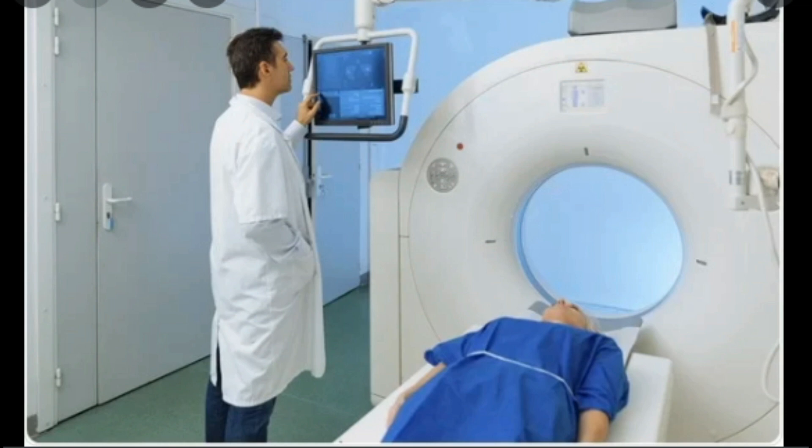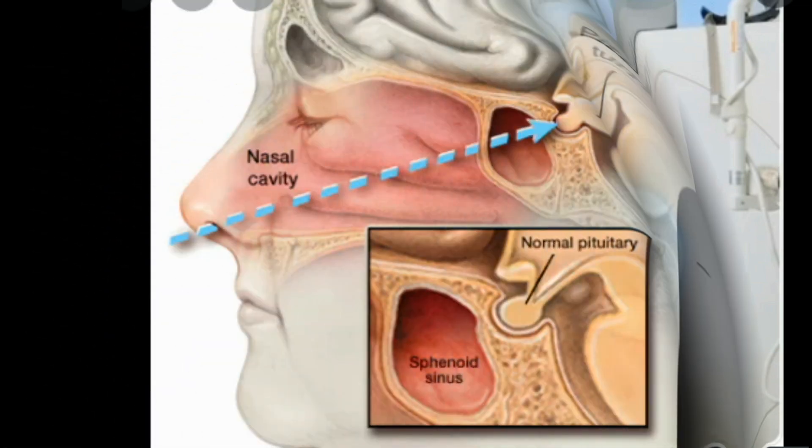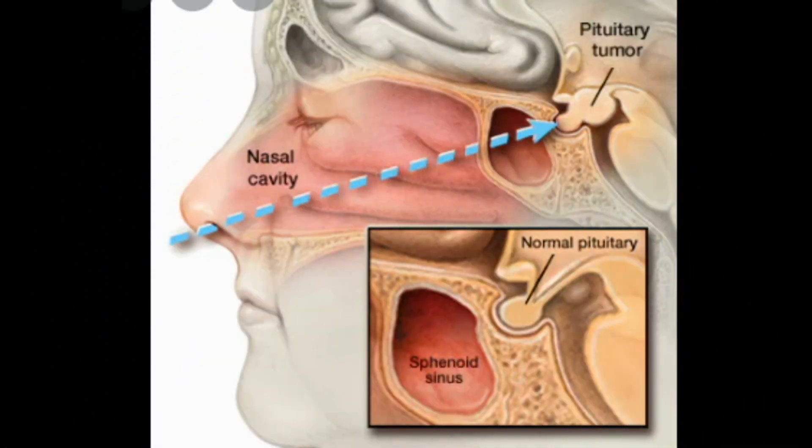Magnetic resonance imaging (MRI) of the pituitary gland with gadolinium enhancement is a recommended approach. When an obvious pituitary tumor greater than 5 mm is identified, further diagnostic evaluation may not be needed. However, about 50 percent of patients will have a normal MRI of the pituitary, with 10 percent having incidental tumors unrelated to ACTH production, so the MRI will not always provide a definitive diagnosis.